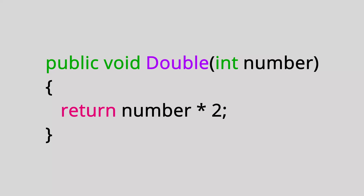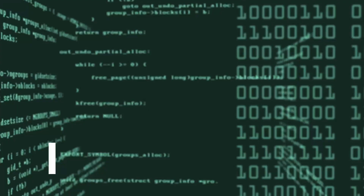Methods in a class are blocks of code that do something. The program executes the statements inside them whenever these methods get called. The term 'methods' is often used interchangeably with functions, but we'll refer to them as methods for this video.